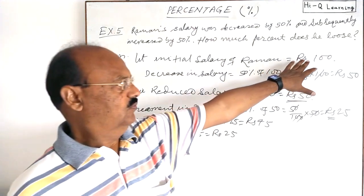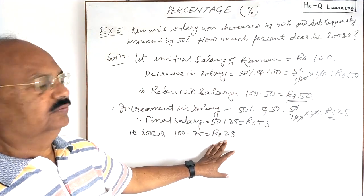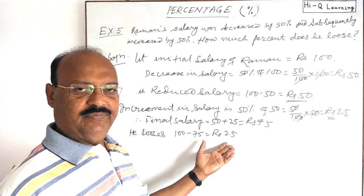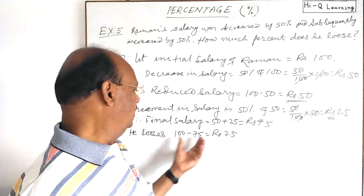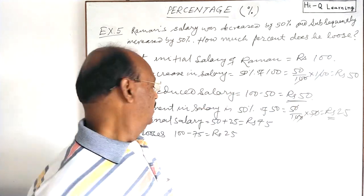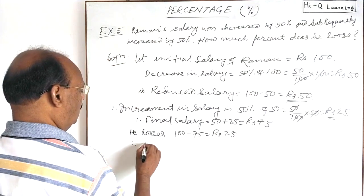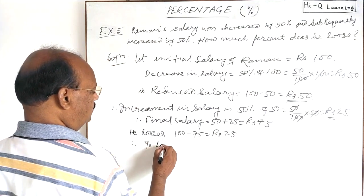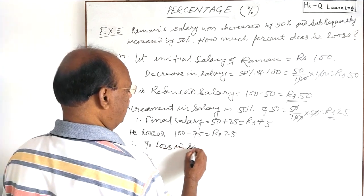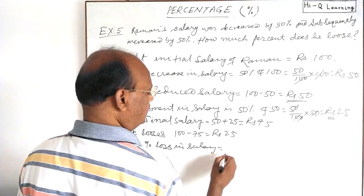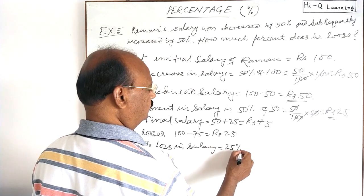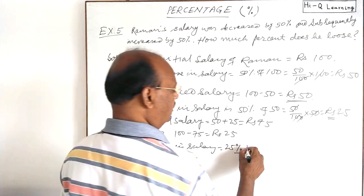Now we have to convert it into percent loss. So out of 100, this much is loss. So percent is 25, because we are calculating the loss on this much amount 100. So therefore, percentage loss in salary is equal to 25 percent. This is the answer.